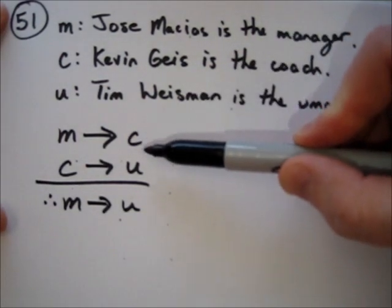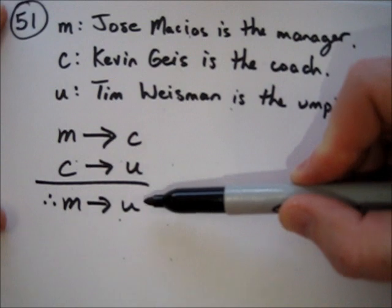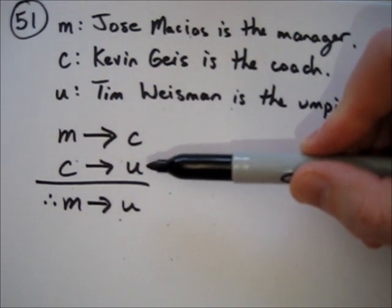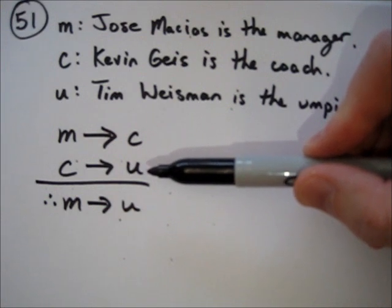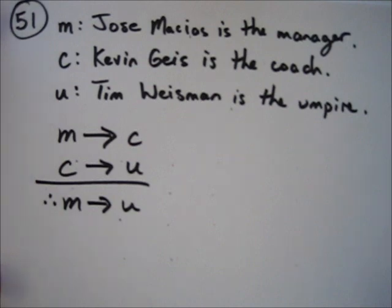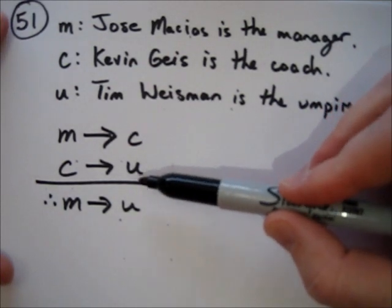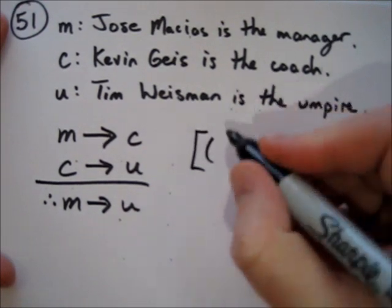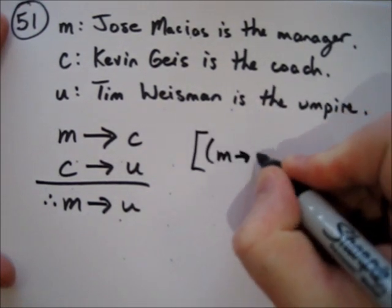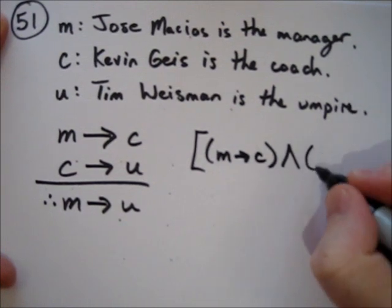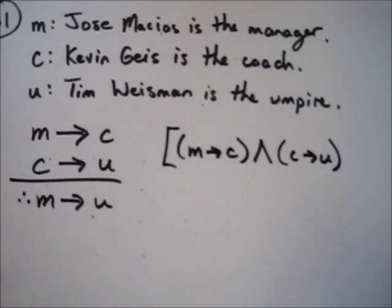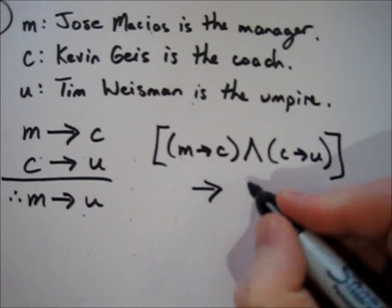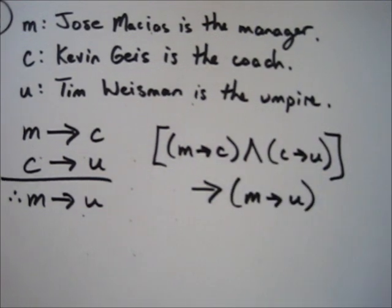This is simply the translation of the English into symbolic logic. Now we have to decide whether or not this is a valid argument. The first method is to draw a truth table of: if proposition one and proposition two, then conclusion — that is, if (M→C) and (C→U), then (M→U).